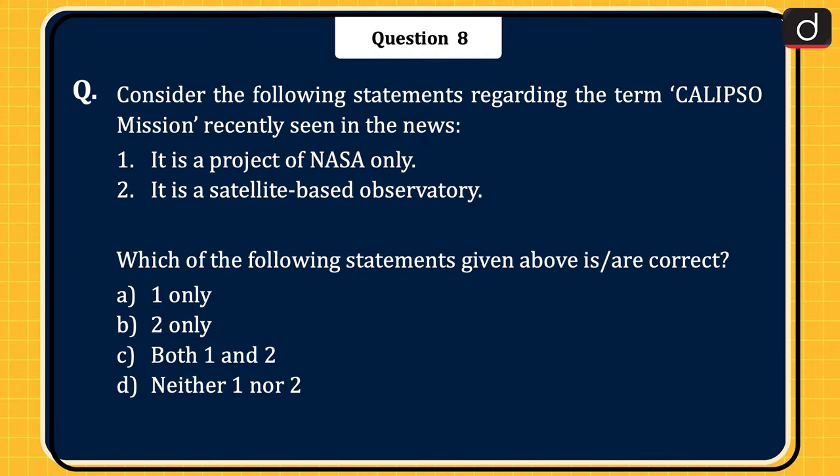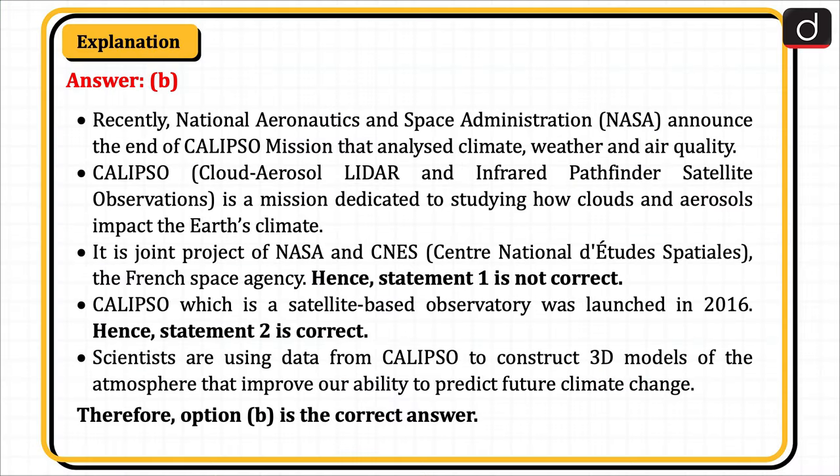The next question: consider the following statements regarding the Calypso mission, recently seen in the news. Statement 1: it is a project of NASA only. Statement 2: it is a satellite-based observatory. Which of the statements is or are correct? 1 only, 2 only, both 1 and 2, or neither 1 nor 2. The correct answer is option B, 2 only. Recently, NASA announced the end of the Calypso mission that analyzed climate, weather and air quality. Calypso, i.e. Cloud, Aerosol, LIDAR and Infrared Pathfinder Satellite Observations, is a mission dedicated to studying how clouds and aerosols impact the Earth's climate. It is a joint project of NASA and CNES, i.e. Centre National d'Études Spatiales, the French Space Agency. Hence, statement 1 is not correct.